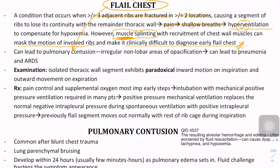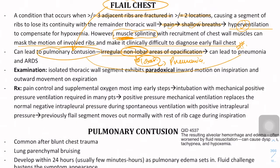Flail chest can lead to a condition called pulmonary contusion, which on X-ray you will see as irregular, non-lobar areas of opacification. Non-lobar because if there is lobar opacification, this can be seen in pneumonia. So here it says non-lobar irregular areas of opacification, but pulmonary contusion can also cause pneumonia.